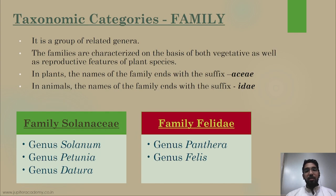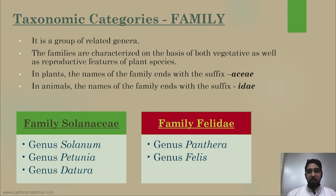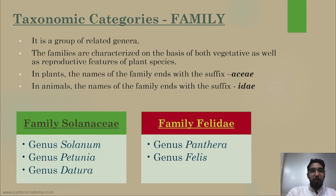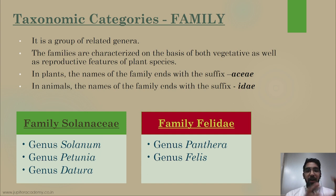The next taxonomic category is family — a group of related genera. For example, the cat family includes both genus Panthera and genus Felis — both big cats and small cats — under one family, Felidae. In plants, family names end with the suffix -aceae, such as family Solanaceae, which includes genus Solanum, genus Petunia, genus Datura, and so on. An important point: families in plants are characterized on the basis of both vegetative and reproductive features.